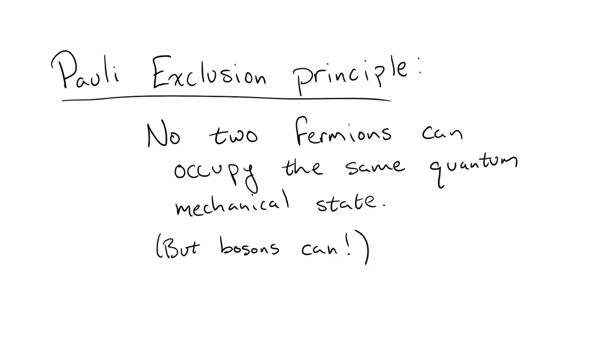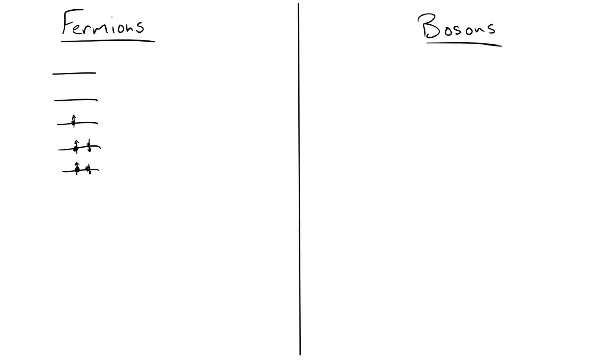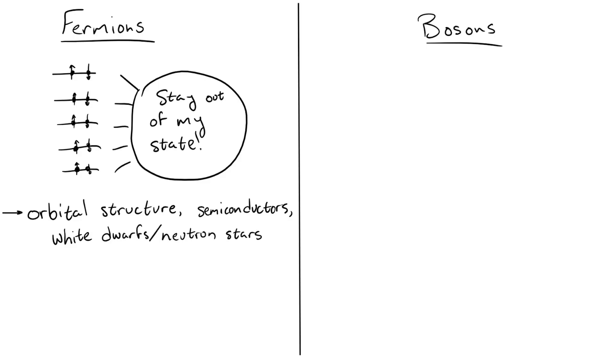This incredibly fundamental law is at the heart of many natural phenomena. It explains why only two electrons can be in an atomic orbital, it allows for the existence of semiconductors, and it's the reason that objects like white dwarfs and neutron stars exist without collapsing.